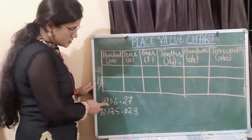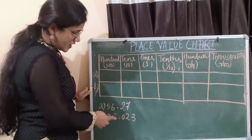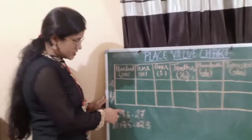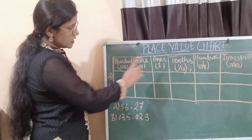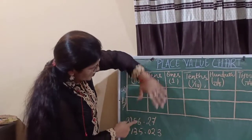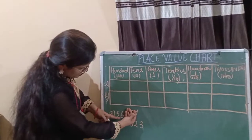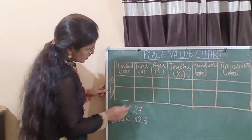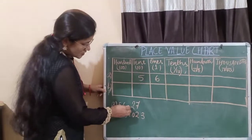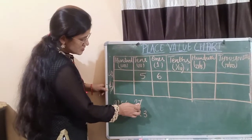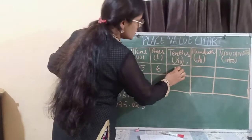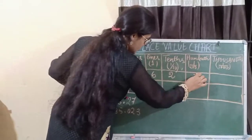So here I have taken two examples. One is 56.27 and the next number is 135.023. Let's see how to represent these numbers in the place value chart. So as you can see, 56 is the whole number part. In the whole number part, 5 is in the 10s place and 6 is in the 1s place. After the decimal point, the numbers are 2 and 7. So 2 is in the 10ths place and 7 is in the 100ths place.